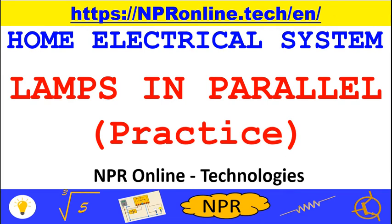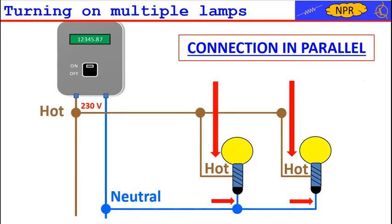In this practical lesson, we will perform the connection of two light bulbs in parallel, just as illustrated in the theoretical lesson. We recall that the connection in parallel consists of connecting the neutral and hot wires directly to all lamps. The connection in parallel is the only one to be used to power 230 volt electric lamps.